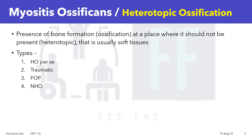The types of myositis ossificans include: HO per se, previously called myositis ossificans circumscripta; traumatic HO, previously called myositis ossificans traumatica; FOP or fibrodysplasia ossificans progressiva, previously called myositis ossificans progressiva; and NHO, that is neurogenic heterotopic ossification.